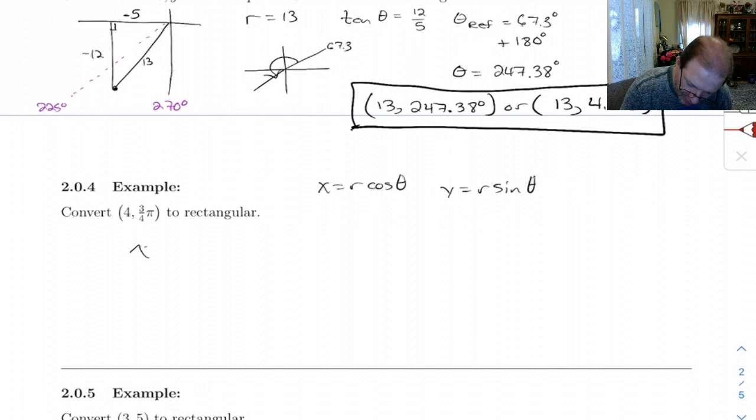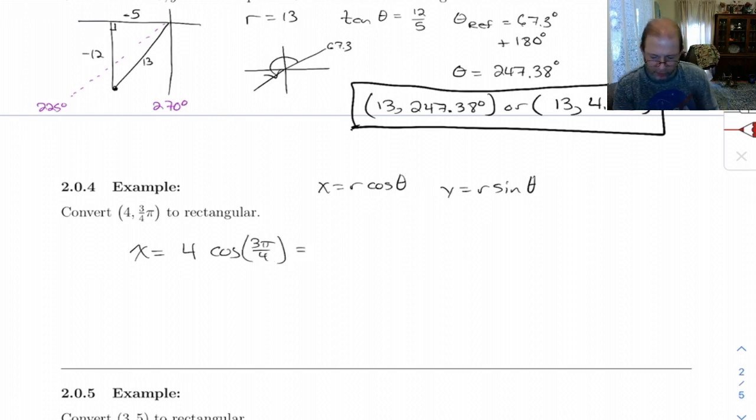And there's really nothing else to it. For this, x is going to be 4 cosine 3 pi over 4. Let's see. Cosine of 3 pi over 4, I'm just going to cheat and use my calculator.